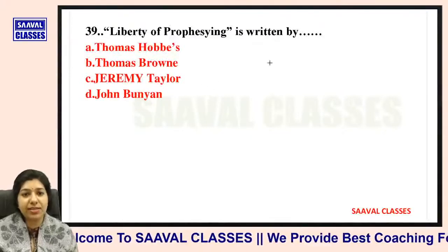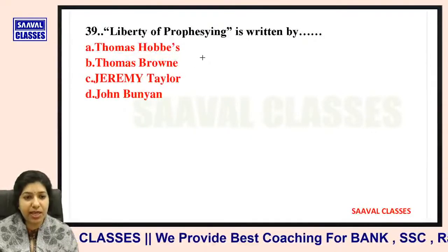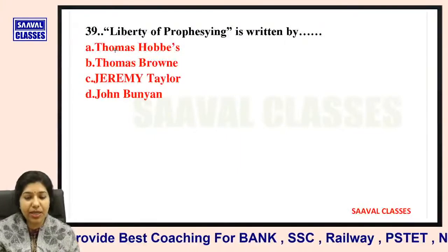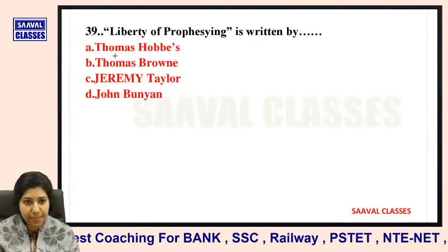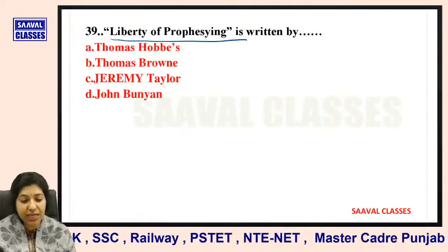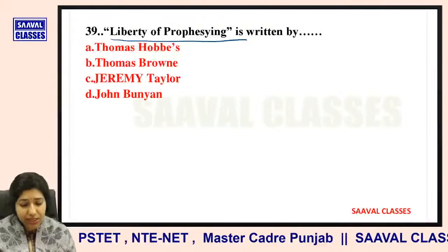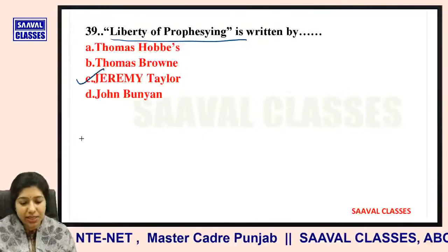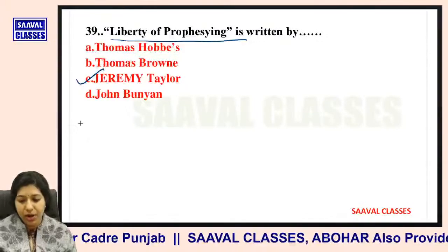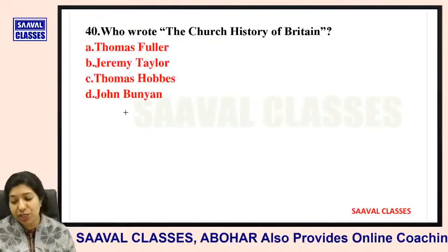Question number thirty-nine: Liberty of Prophesying is written by Thomas Hobbes, Thomas Brown, Jeremy Taylor, or John Bunyan? Prophecy means prediction. This work — Liberty of Prophesying — is written by Jeremy Taylor.